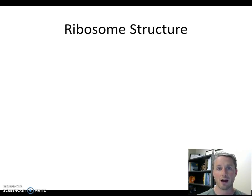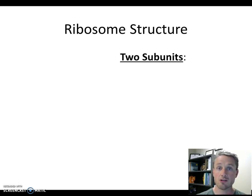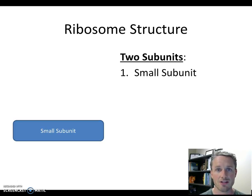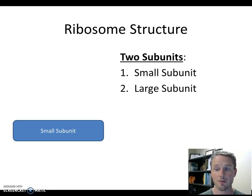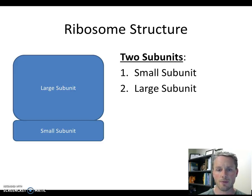Let's start by thinking about the ribosome. The ribosome is really central to the function of translation — we can't do translation without it. The ribosome is made out of two subunits, two major parts. The first subunit is called the small subunit, and the other subunit is called the large subunit because it's much bigger. The small subunit and the large subunit bind together to form a complete ribosome.